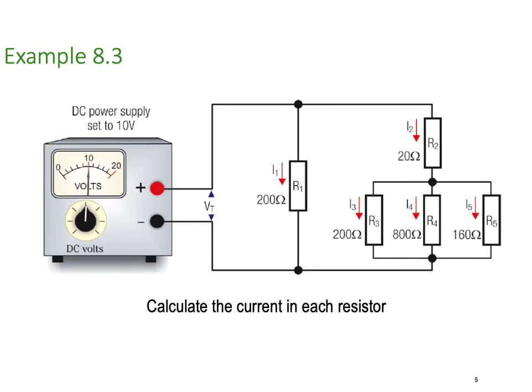Here's an example. We've got a DC power supply in this particular case set to 10 volts and we're going to calculate the current in each resistor. We want to find the current in I1, I2, I3, I4, I5, etc. We know what the voltage total is and we know the resistance values. R1's 200 Ohms, R2 at 20 Ohms, R3 at 200, R4 at 800 and finally R5 at 160.